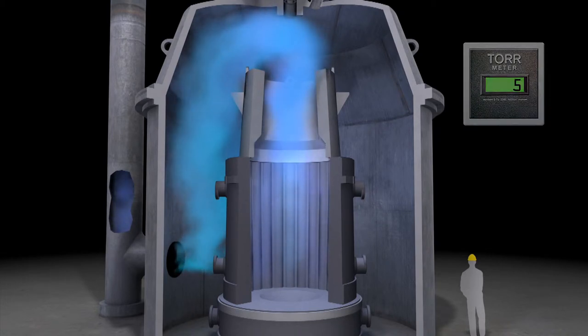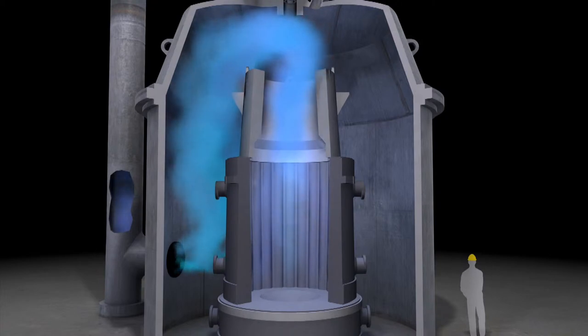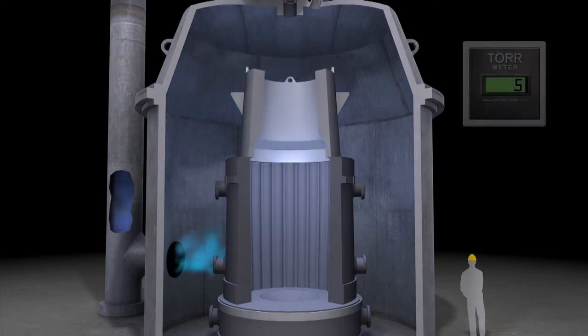This removes moisture from the ingot mold walls, an important step, because any moisture would instantly become hydrogen and oxygen as the molten steel enters the mold, counteracting the degassing efforts.